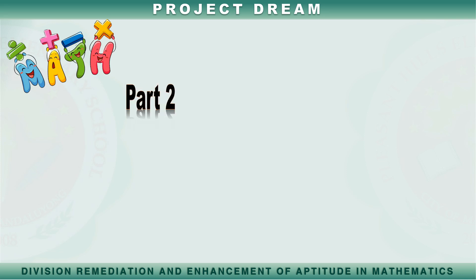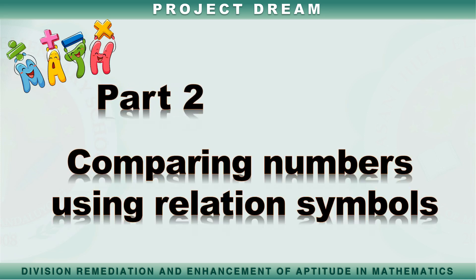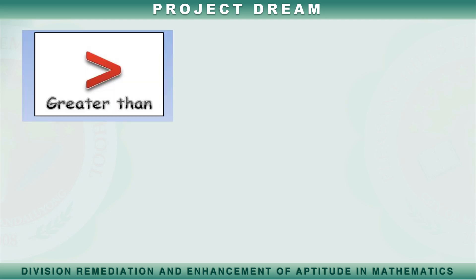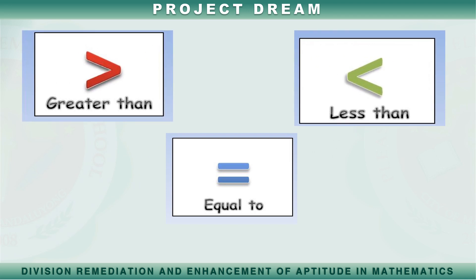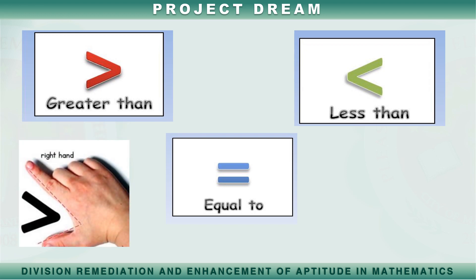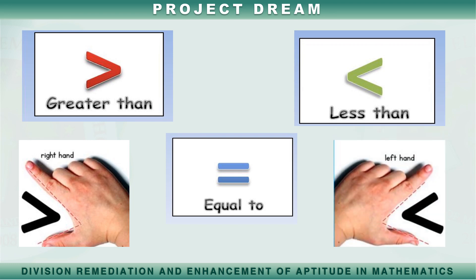To continue our lesson, we need to compare numbers using relation symbols. In comparing numbers, we use relation symbols such as greater than, less than, and equal to. It is sometimes confusing to identify these symbols because they look similar. To easily remember: form an L-shape using your right hand — the L-shape stands for greater than. Form an L-shape using your left hand — the L-shape stands for less than.